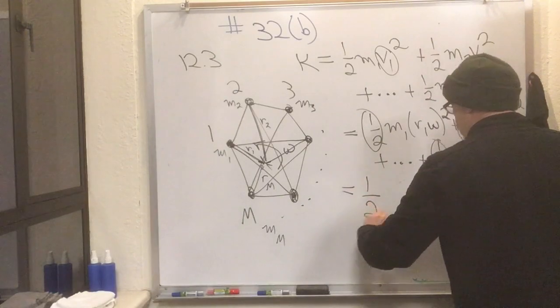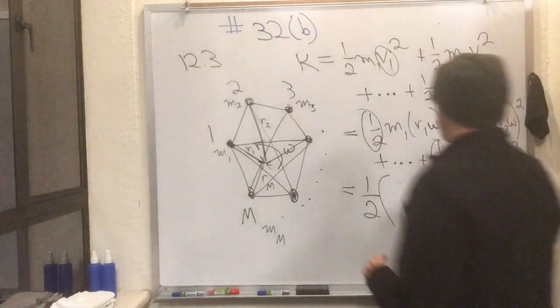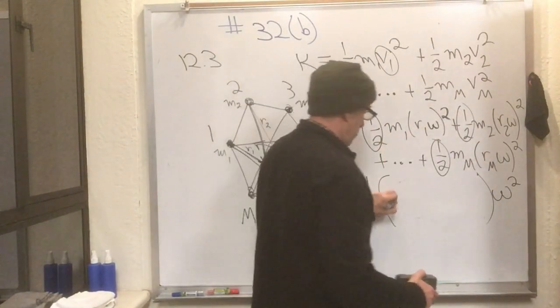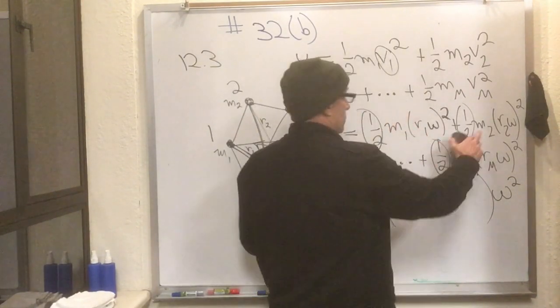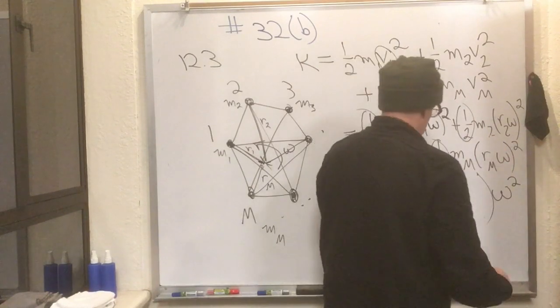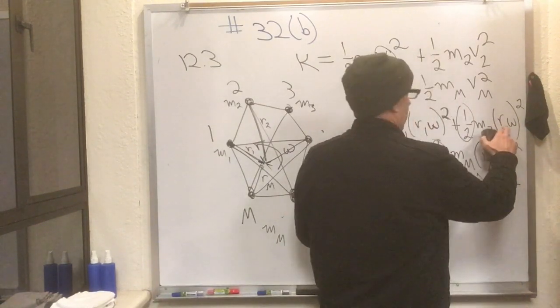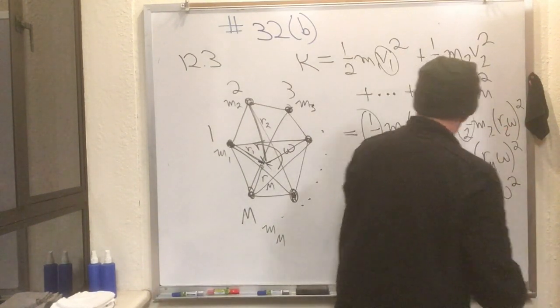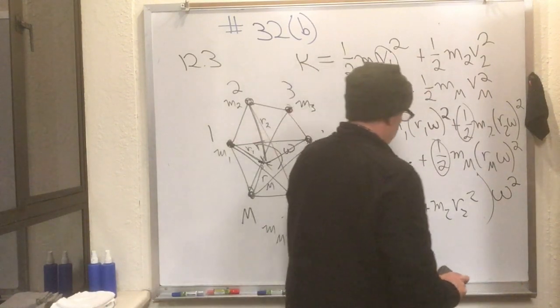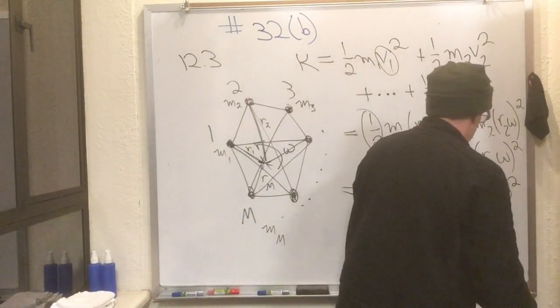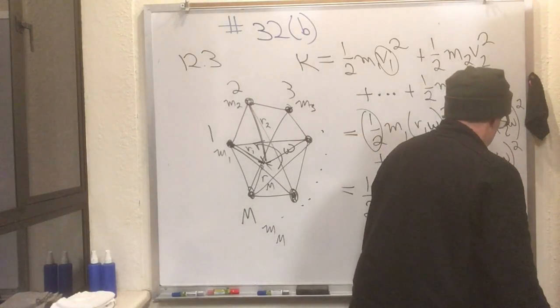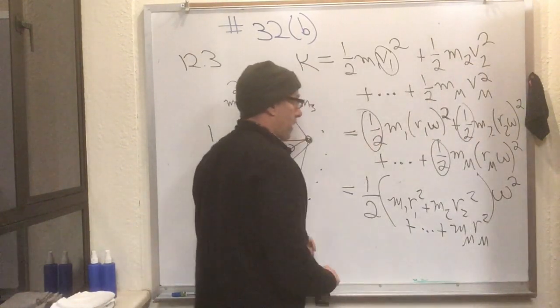And of course, every term has a one-half out front, so let's factor that out. And what are we left with in between? Well, this term has an m1 and then it has an r1 squared, and this term has an m2 and then it has an r2 squared, plus dot dot dot, plus the last term has an m sub m times r sub m squared. So there, I just factored it.